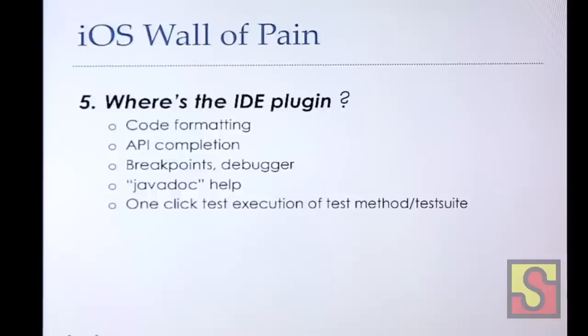The last iOS pain point: I'd love to see an IDE plugin. There's no code formatting when you're developing JS scripts in Eclipse — hopefully you're not doing that in Instruments. There's no API completion. It would be great to have all your UI Automation API completion, breakpoints, debugger, Javadoc help, and one-click test execution. These are basics for having a productive environment to write tests.